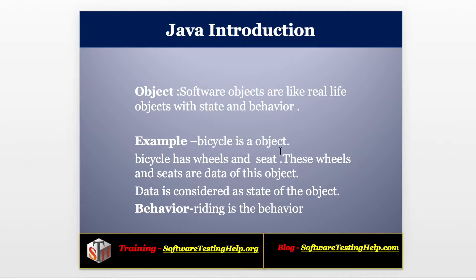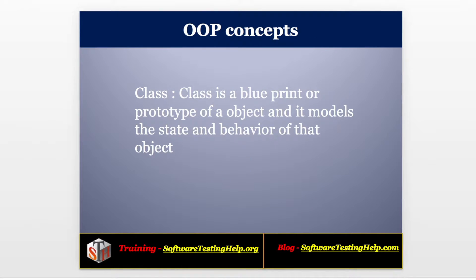The bicycle behavior is riding, so riding is the behavior in programming. Next we will see about the class. What is class? Class is a blueprint or prototype of an object and it models the state and behavior of the object.